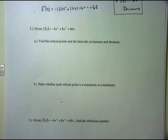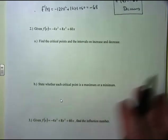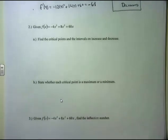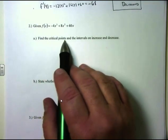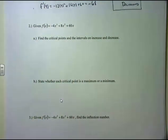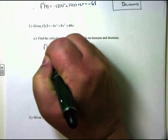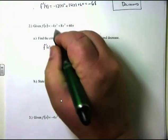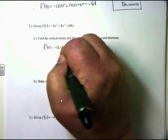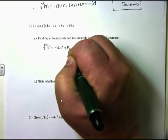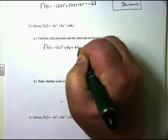Let's take a look at this same function: f(x) = -4x³ + 8x² + 60x. This is basically what we're going to be analyzing throughout the rest of section 4.3. Take this function and find the critical points and the intervals of increase and decrease. We'll find the critical points first by taking the derivative, which again is -12x² + 16x + 60.